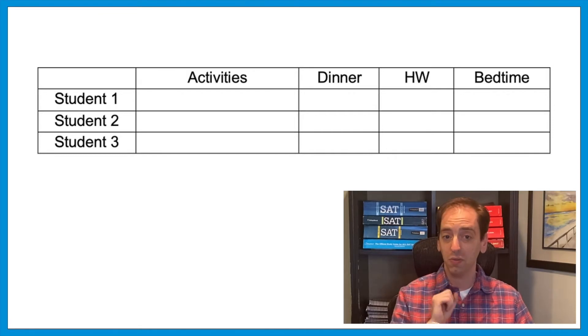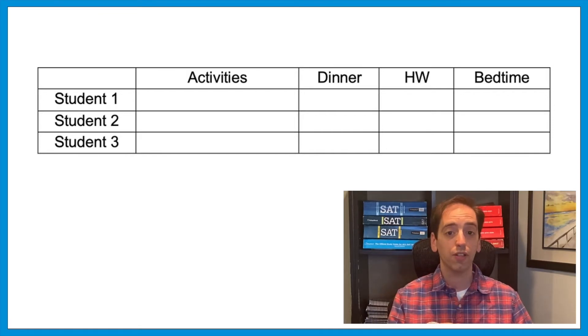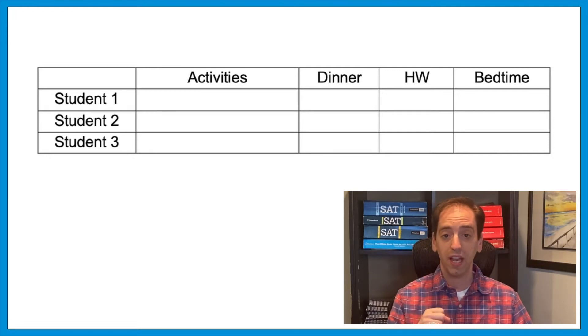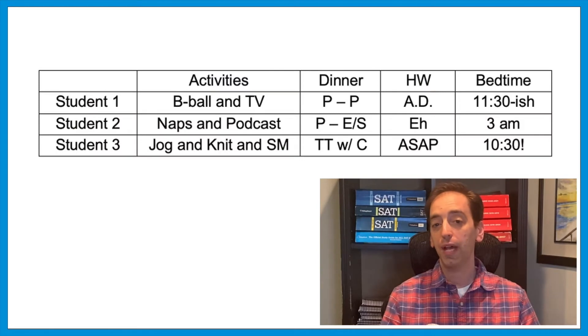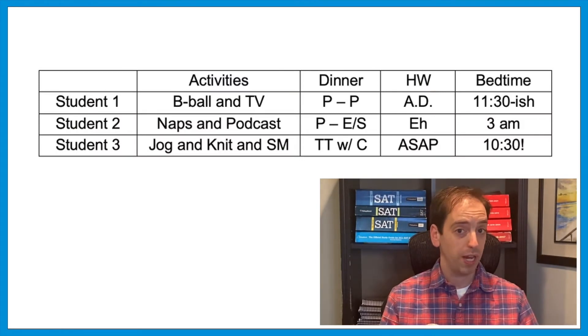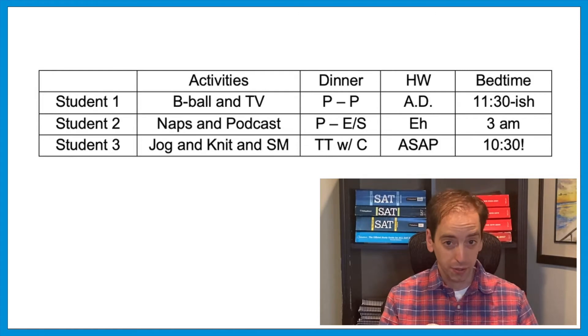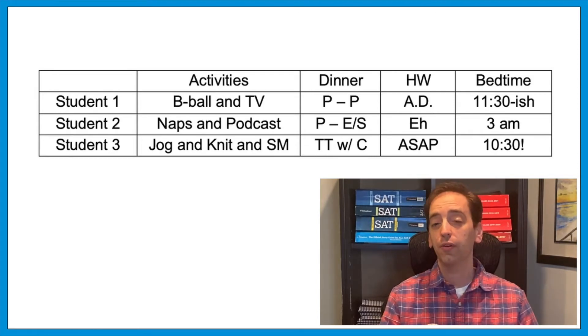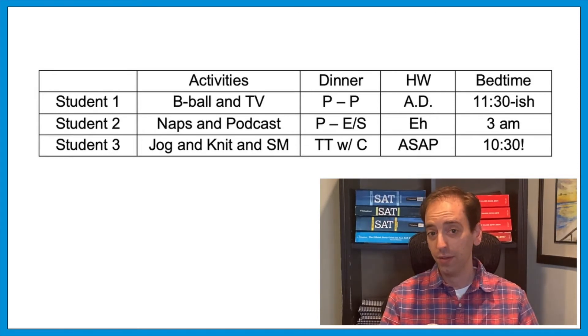So with the information we just saw, up and down we could list students 1, 2, and 3, and then across list the activities they do after school, the type of dinner they have, their homework routine, and bedtime. As you read, you take these key points and write them into your chart. Student 1 plays basketball and then watches TV. For dinner, it was pizza — but plain, because toppings are gross. Homework was after dinner, with a bedtime around 11:30.